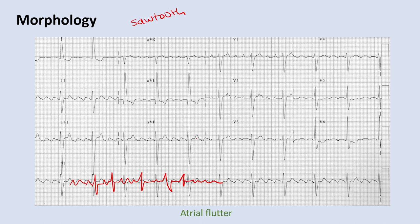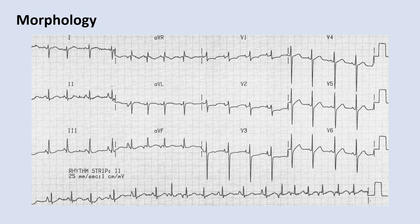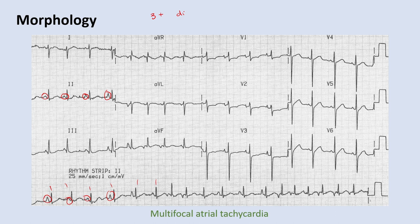This EKG shows really huge P waves, but then looking more closely, all the P waves have different morphologies — an irregular rhythm with multiple P wave morphologies. This is called multifocal atrial tachycardia, or MAT: three or more different P wave morphologies with an irregularly irregular rhythm. MAT commonly arises in patients with longstanding lung disease, and the treatment is to treat their underlying lung disorder.